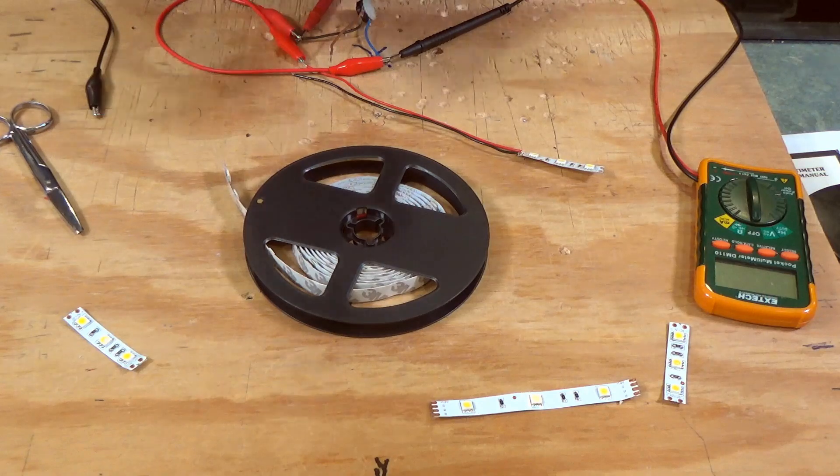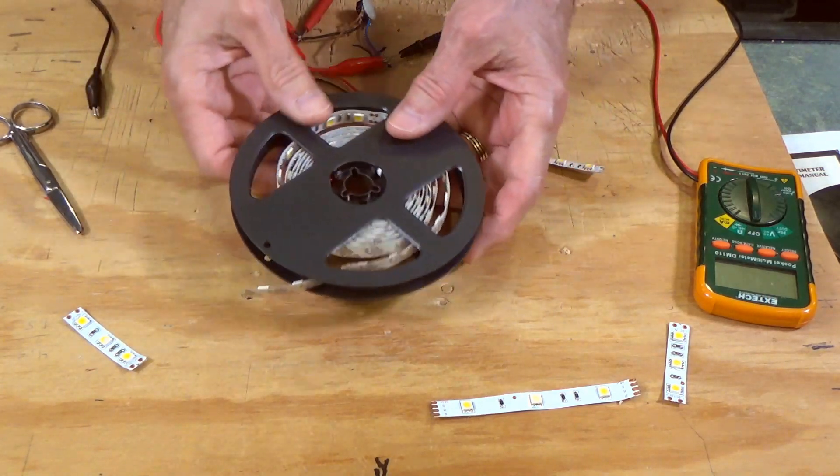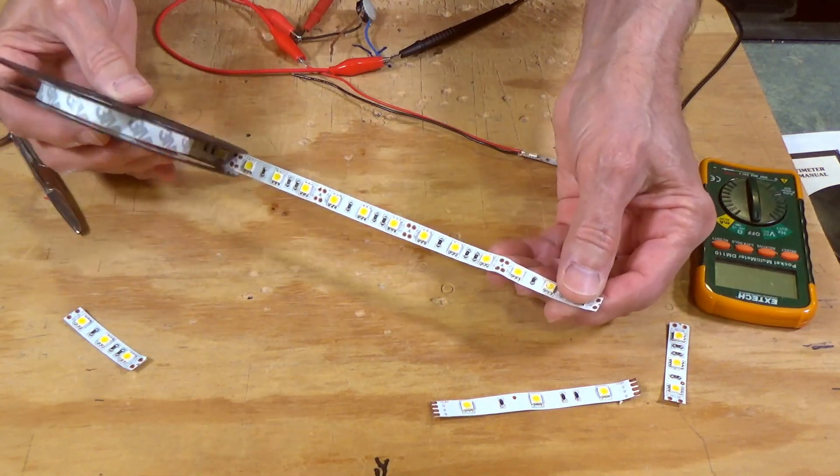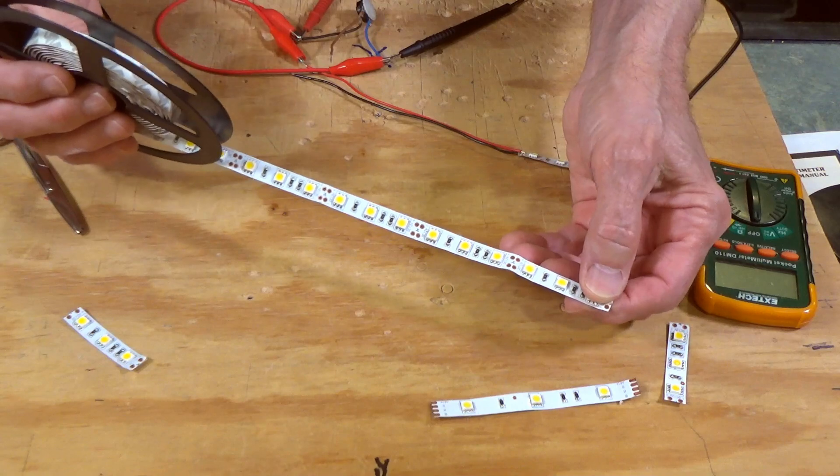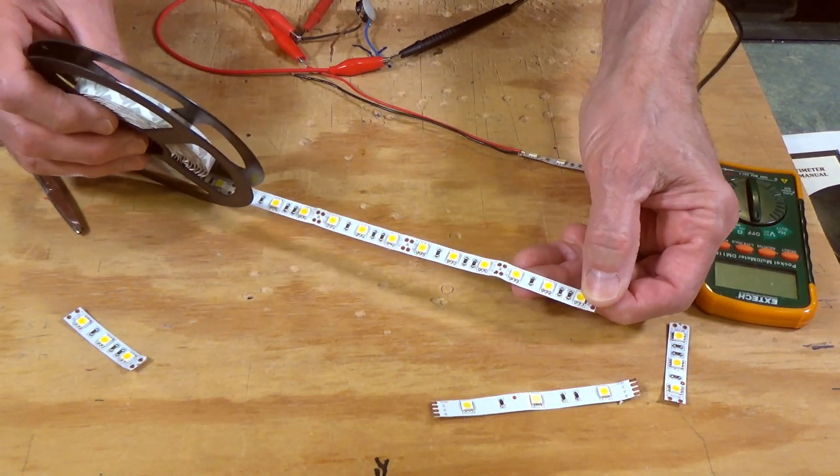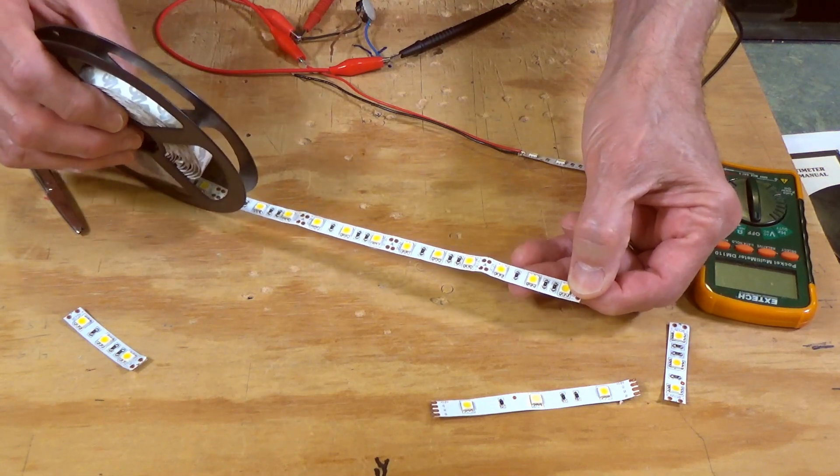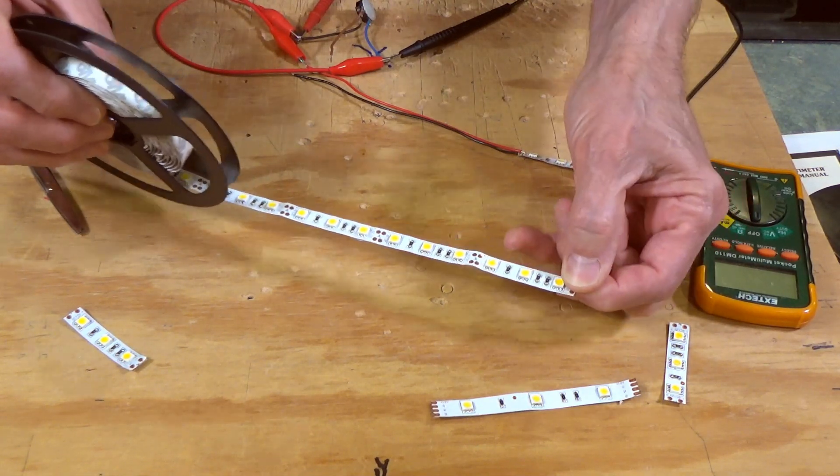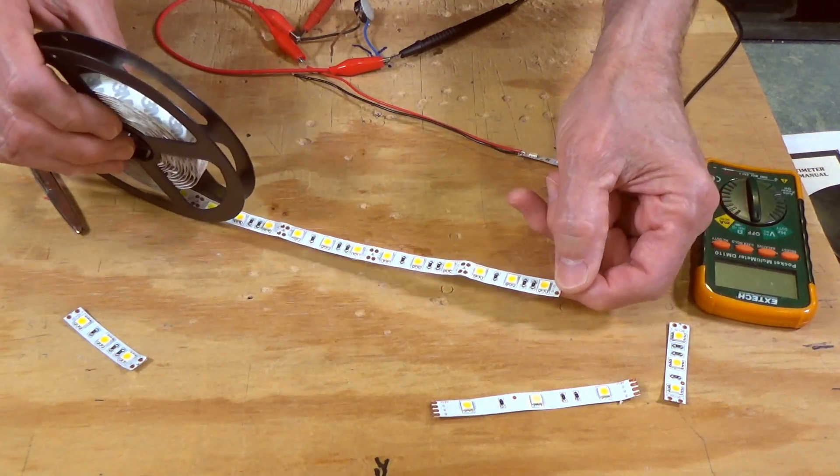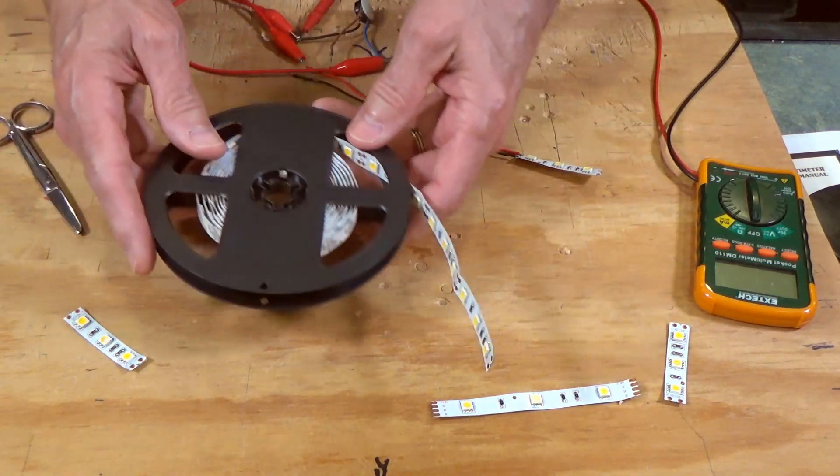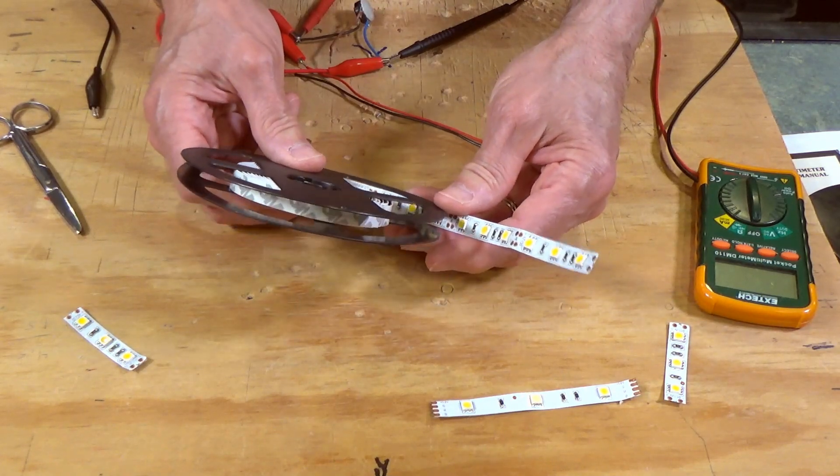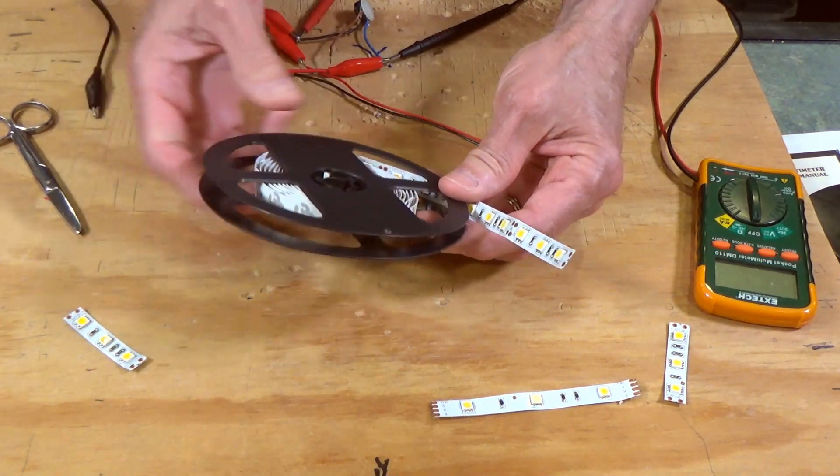The approach that I'm going to be showing you today uses these strips of LEDs. These are readily available. You can get the rolls from Micromark easily, or I got these off of eBay directly from a supplier in China. They come on these reels with five meters on each reel, so that's 15 feet that you get.